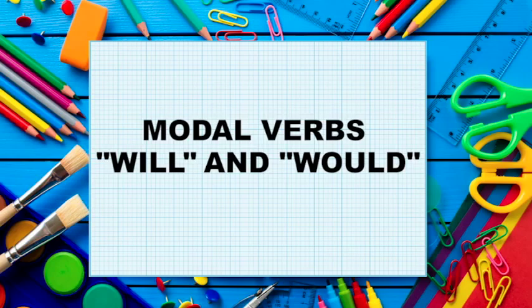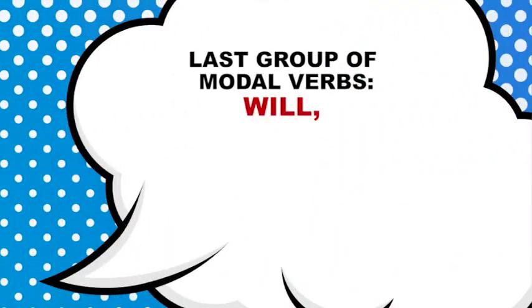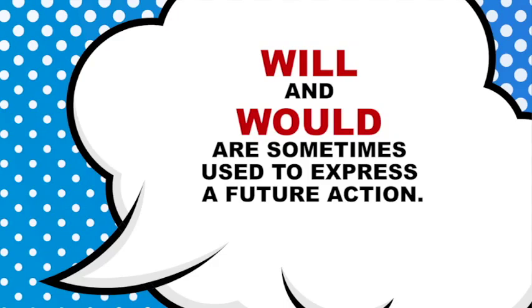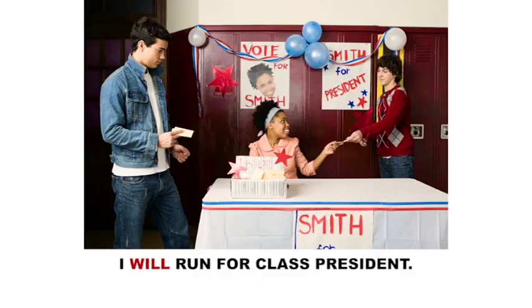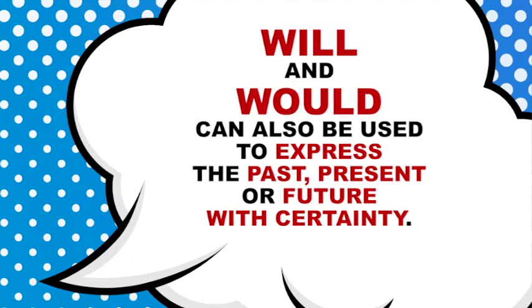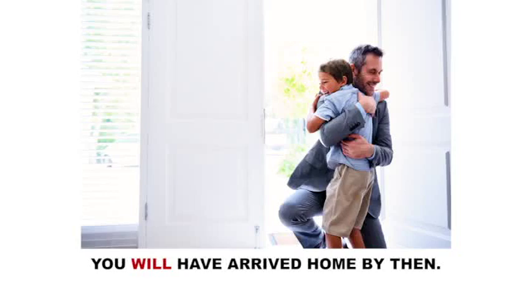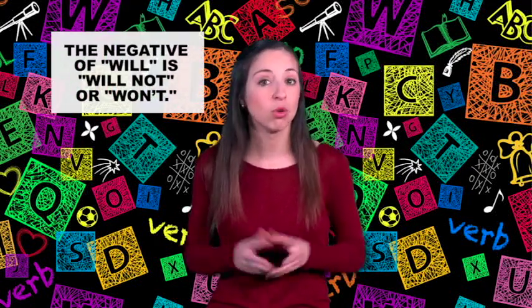Modal verbs will and would. Let's take a look at our last group of modal verbs: will, would, ought, and shall. Will and would are sometimes used to express a future action: 'I will run for class president.' They can also be used to express the past, present, or future with certainty — meaning you are sure that it did happen, can happen, or will happen. For example: 'You will have arrived home by then.' The negative of 'will' is 'will not,' or 'won't.'